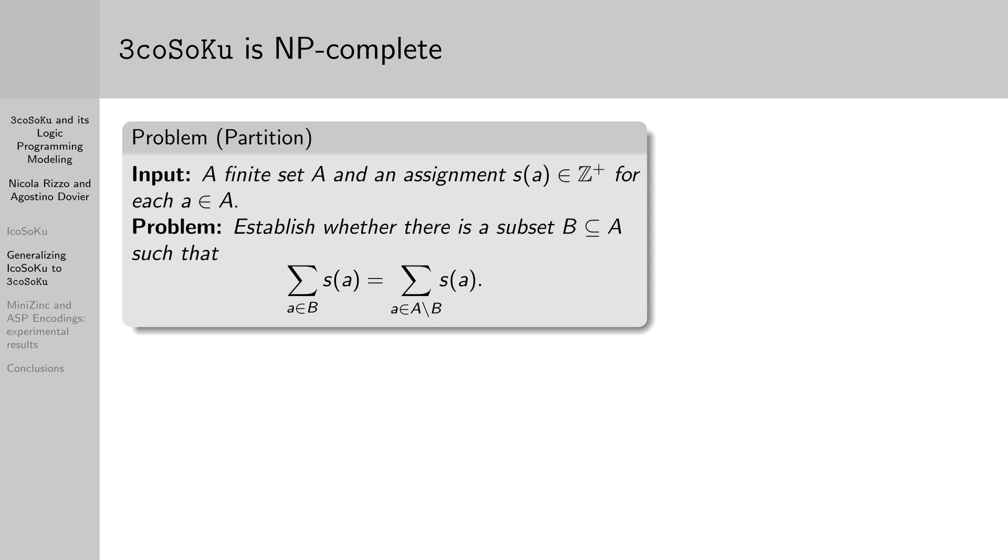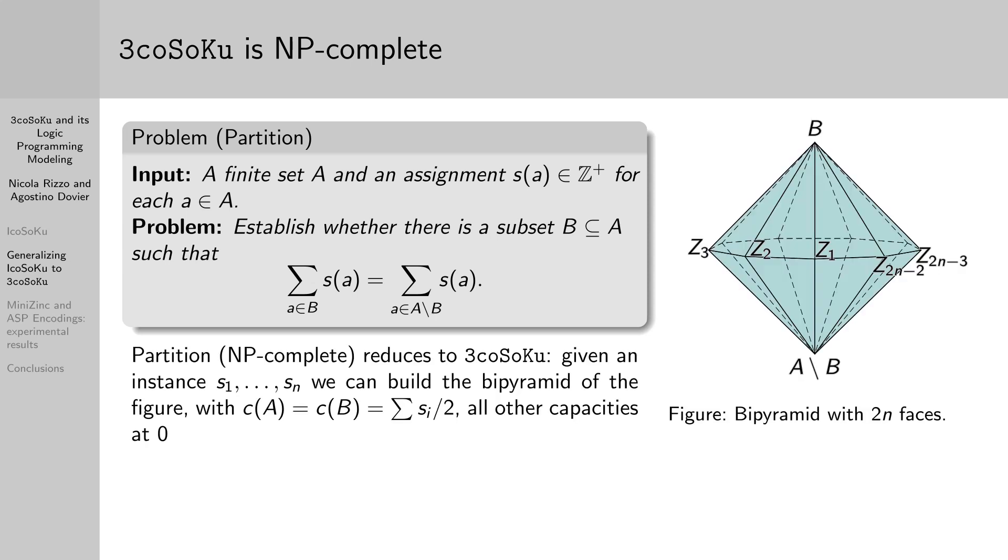Given a set A and a function assigning to each element of A a positive integer weight, split A in two sets such that they weigh the same. We can transform every instance of partition, defined by weights s1 to sn, into an instance of 3coSoKu by building the bipyramids seen in the figure, made by fusing together two pyramids with n triangular faces. We assign to the two apices of the bipyramid a capacity equal to half the sum of all the weights, and using the following tiles, a solution to this instance of 3coSoKu corresponds to a solution of the original problem, and vice versa.